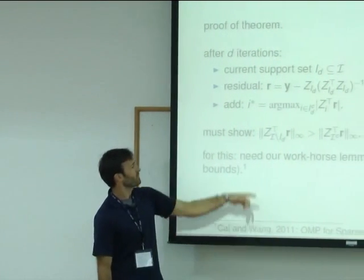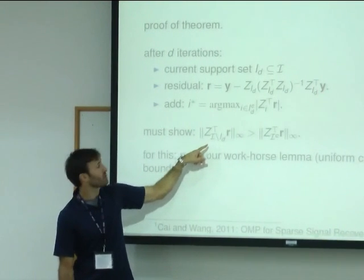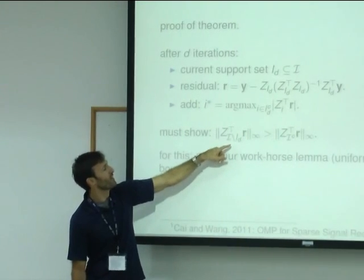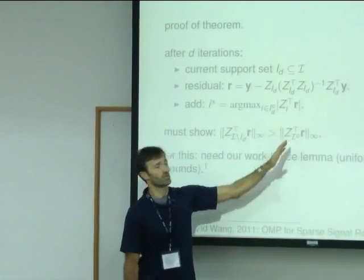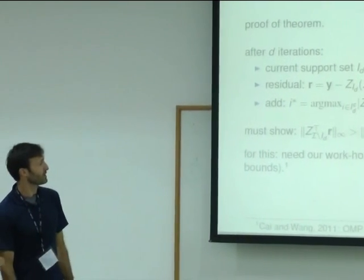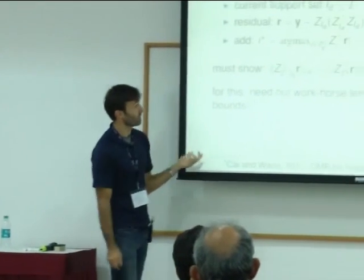And then what you add is whatever element is biggest in terms of inner product between one of your noisy columns and this residual which might not be the right residual. So what we have to show is that the largest inner product among elements in the correct set that you haven't added is bigger than every single other element when you take this inner product. And this is why we need the workhorse lemma and this is why you need these uniform concentration bounds.